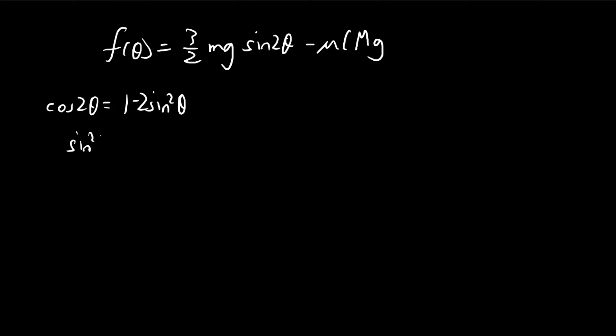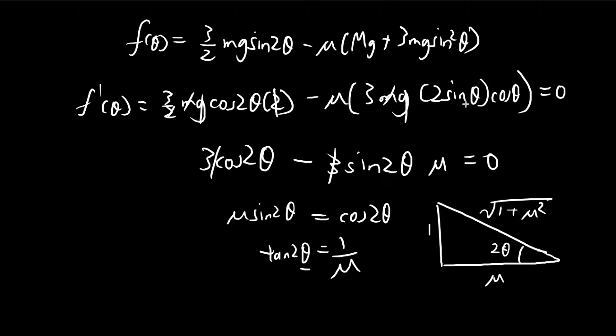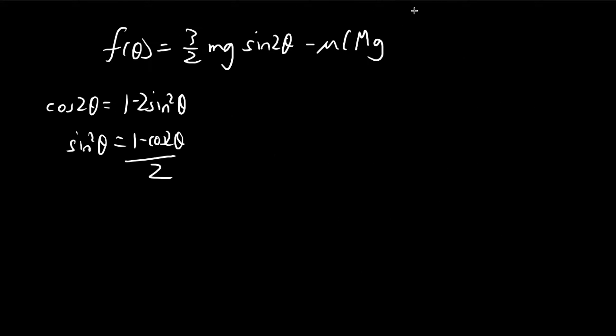So this tells me that sine squared theta is equal to 1 minus cosine 2 theta divided by 2. So I can substitute this. So sine squared theta becomes 1 minus cosine 2 theta divided by 2.